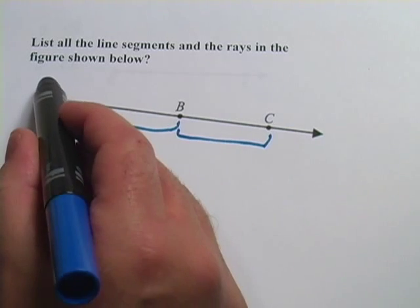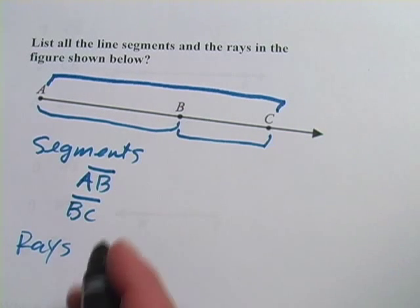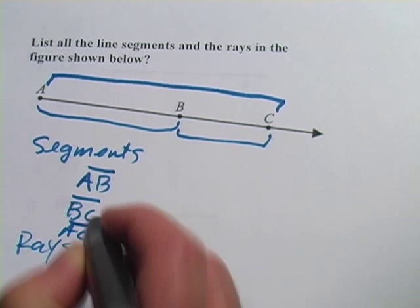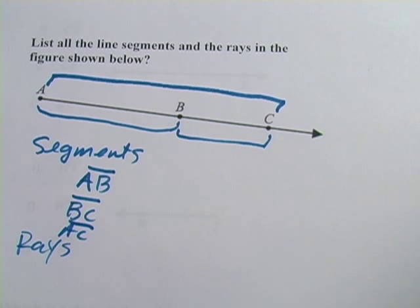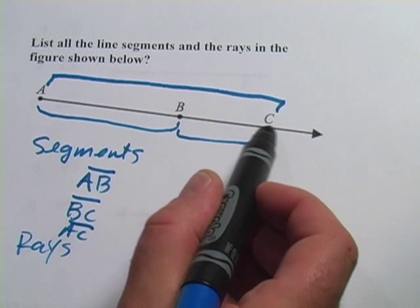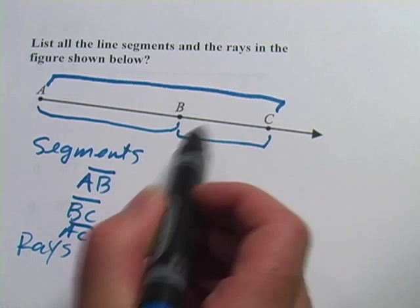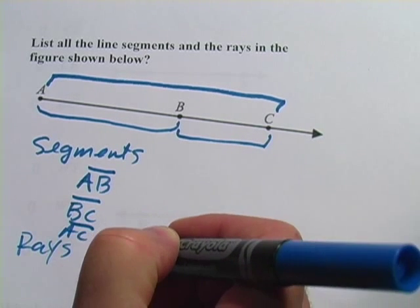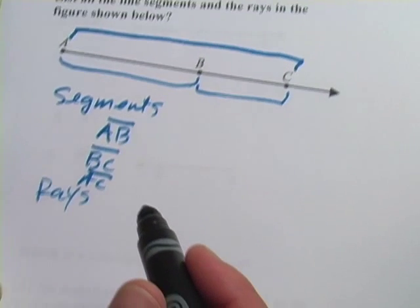But there's also a segment from A to C, and we could write that one. And I think that's all that there are. You could say segment CB, but that's the same thing as segment BC. So it's not really a different one.